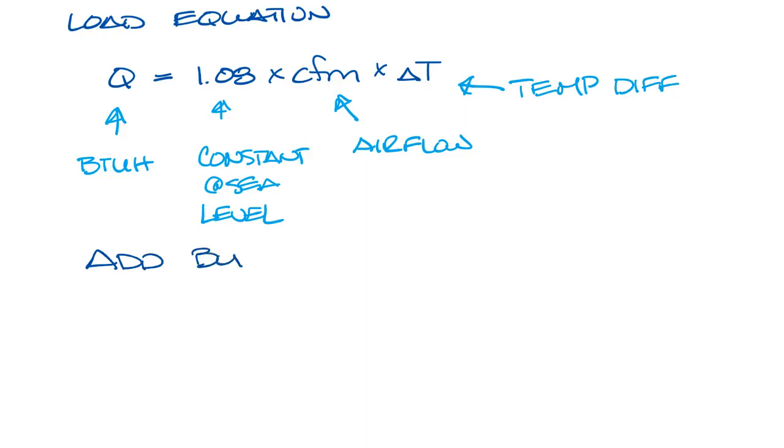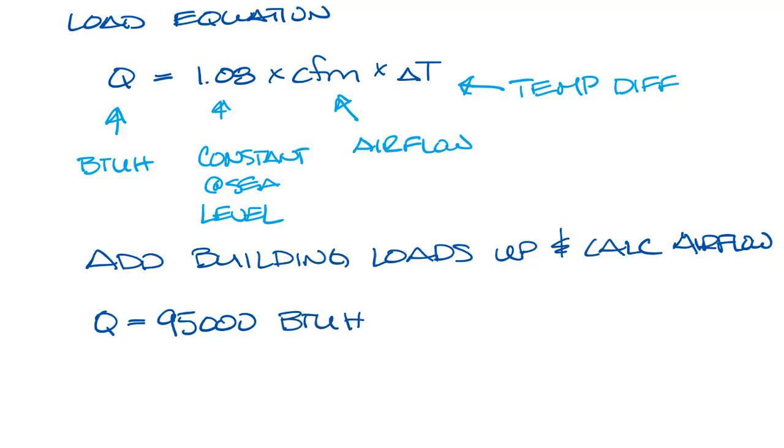So if you add all your building loads up, you can calculate the air flow. So let's say that we have a building, and we've already added the loads up, and they come up to 95,000 BTU. And we know we want to supply 55 degree air, and we want to keep the space at 75 degrees.